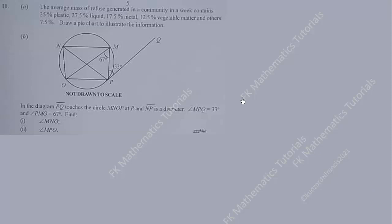Now let's proceed with Part B. In the diagram, line segment PQ is a tangent to the circle at point P, and line segment NP is a diameter. Since NP is a diameter, the angle in the semicircle is 90 degrees. Angle MPQ is 33 degrees and angle PMO is 67 degrees. We need to find angles MNO and MPO.